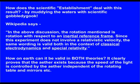How on earth can it be valid in both theories? It clearly proves that the ether exists because the speed of the light is controlled by the ether independent of the rotating table and mirrors.